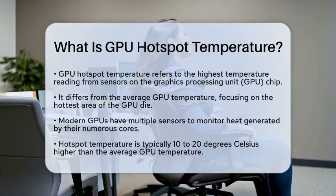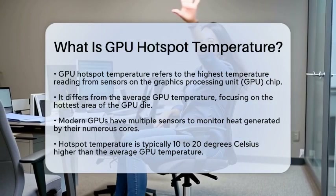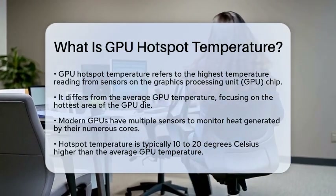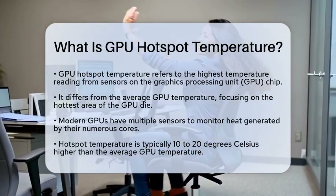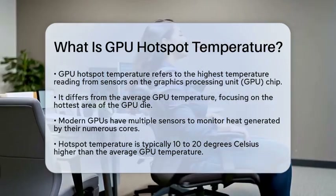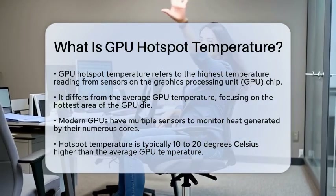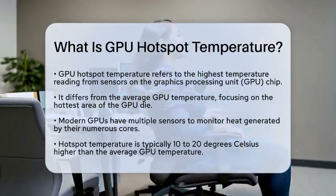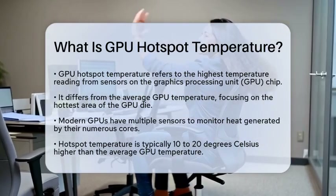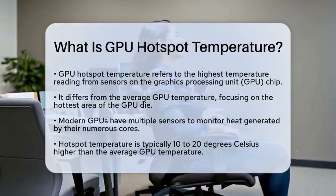Graphics processing units are packed with hundreds or thousands of cores that generate a lot of heat when they are working hard. To keep track of this heat, modern graphics cards come with multiple temperature sensors placed strategically around the chip. The sensor that reports the highest temperature at any given time defines the GPU Hotspot Temperature.